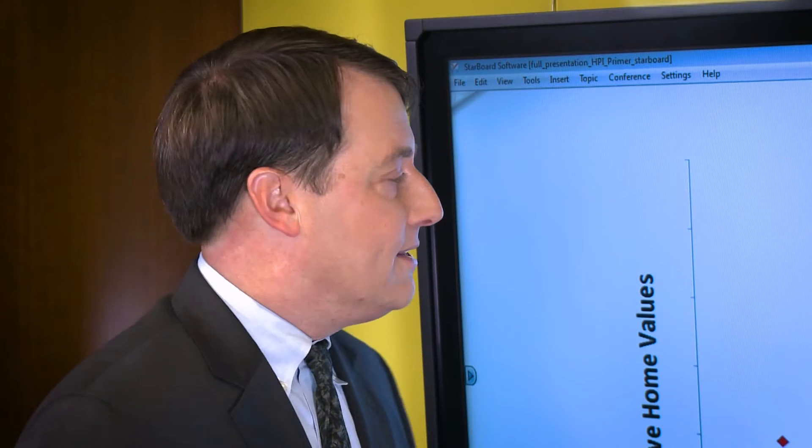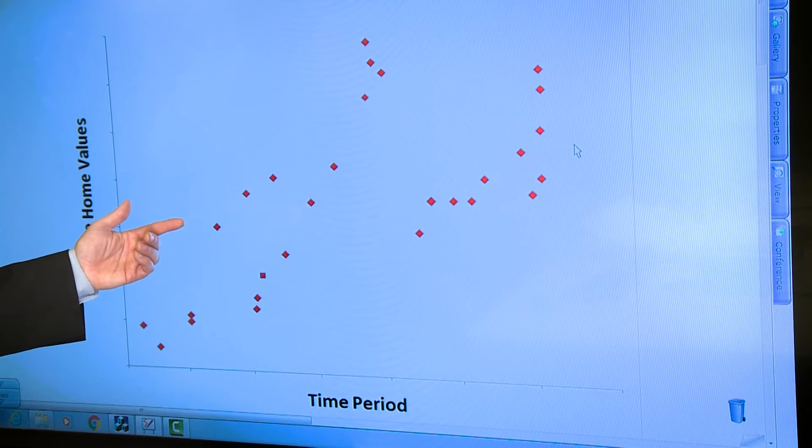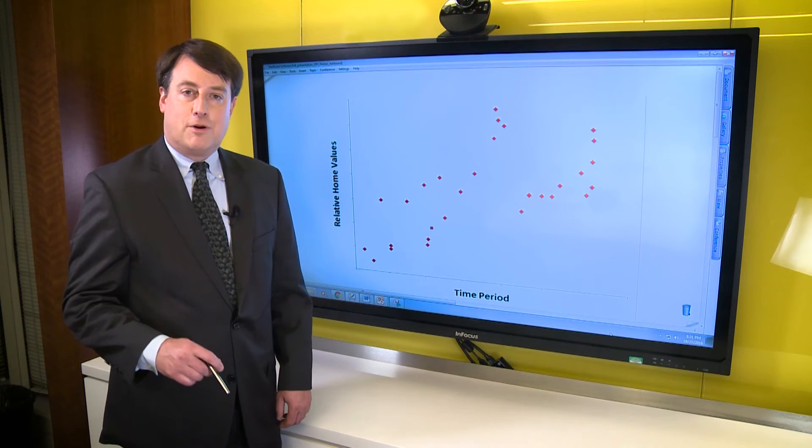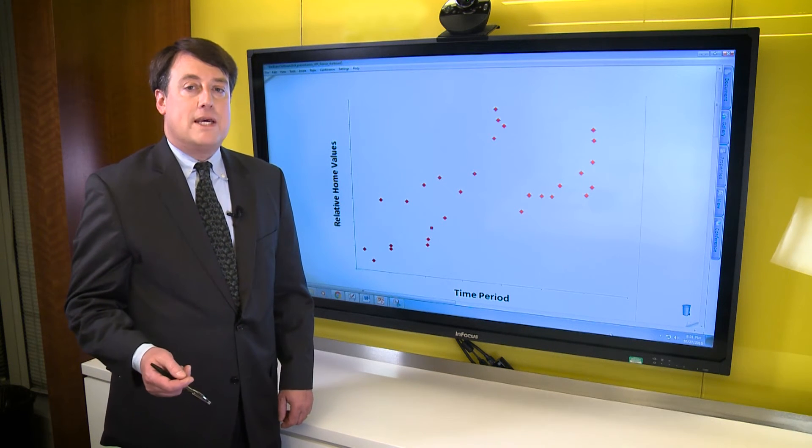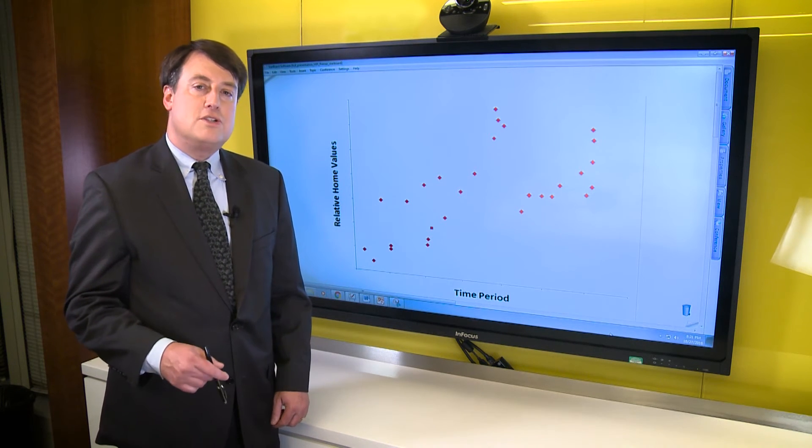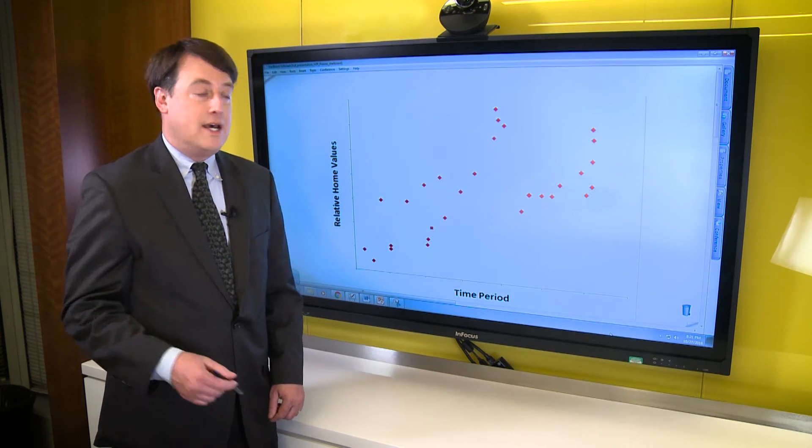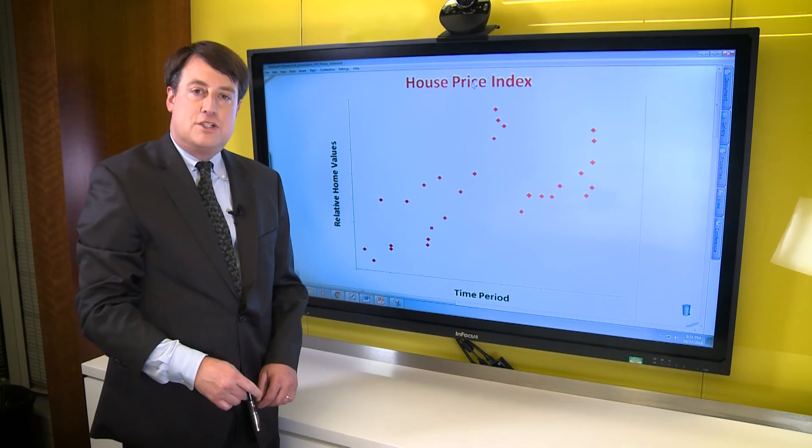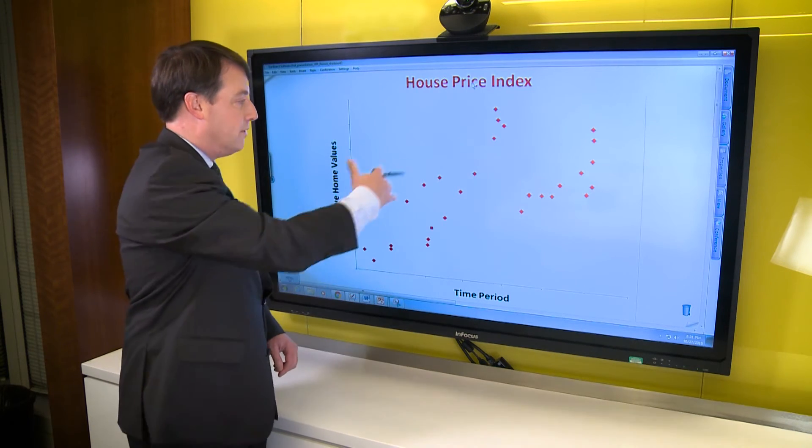Then the final stage of the process is to take this database of pairs, now shown with these red diamonds, and apply a statistical technique known as regression to approximate the market trend. The specific regression model, known as the repeat transaction approach, produces a set of historical measures, a house price index, that broadly mimics the price changes that are observed in all of the pairs as a whole.